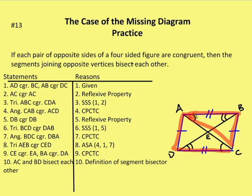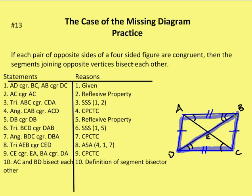Now I can say that angle CAB is congruent to angle DCA by CPCTC. Then I say DB is congruent to itself, and again AD is congruent to CB and AB is congruent to DC. So now I can say triangle BCD is congruent to triangle DAB by side-side-side. So now I know that triangle EDC is congruent to triangle ABE by CPCTC.